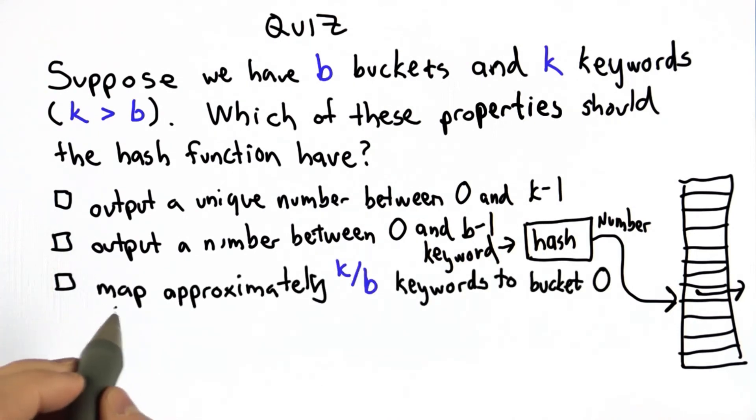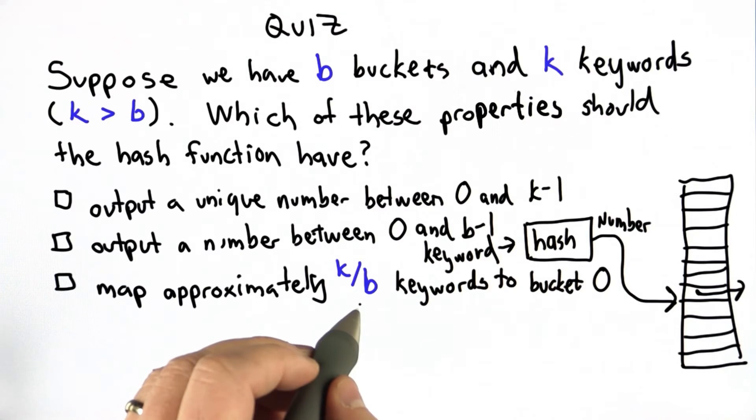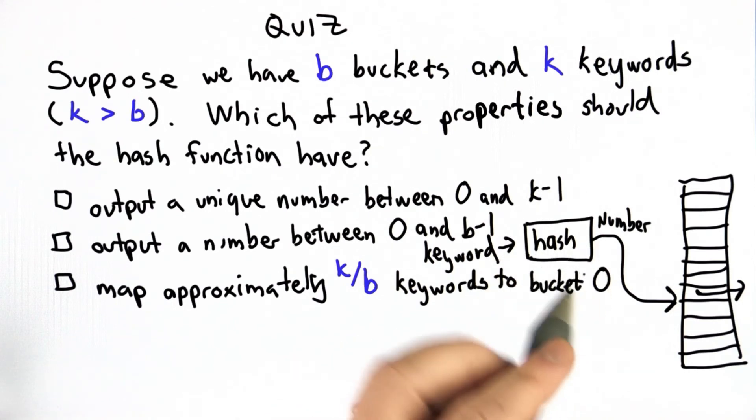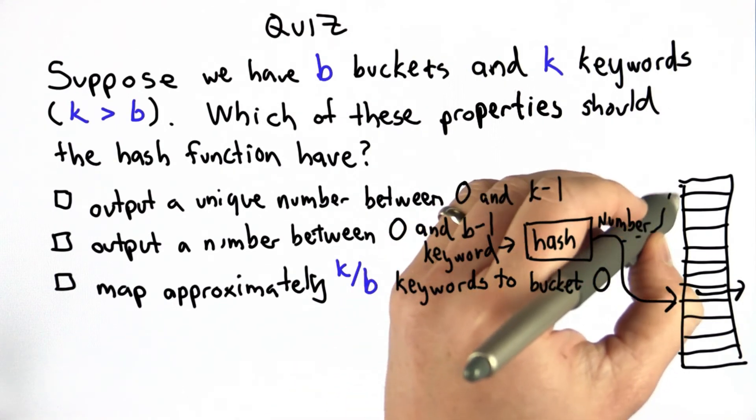The third choice is it should map approximately k divided by b of the keywords to bucket 0. That means for that number of keywords, the output of the hash should be 0, and it should map to the first bucket.